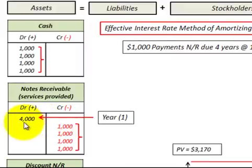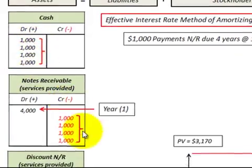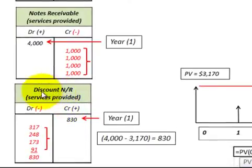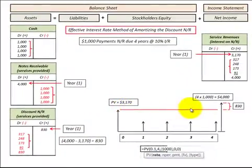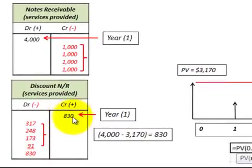Initially we recorded the notes receivable at $4,000, then we had four payments at the end of each of the four years, so we reduce our notes receivable by those payments and increase our cash account by the payments received. We also put down a discount as a contra account to the notes receivable to account for the $4,000 face value versus its $3,170 present value — so the discount amount is $830.